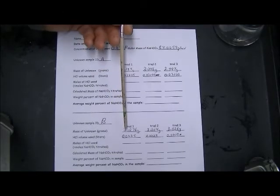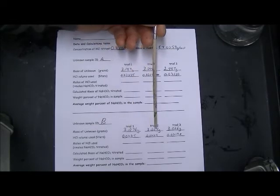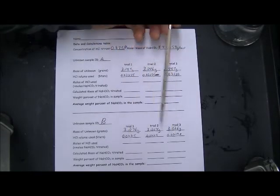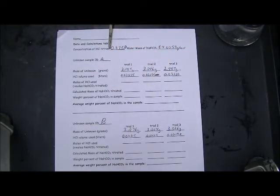Down here is sample B, with the three masses and the three volumes of titrant. The titrant was 0.875 molar. The molar mass of sodium bicarbonate is 84.0059 grams per mole.